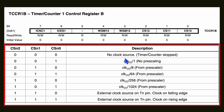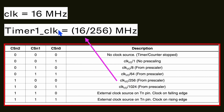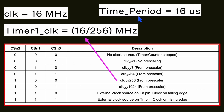For our example, we use a pre-scaler of 256, so Timer 1 clock = 16 MHz / 256 = 1/16 MHz. Converting from frequency to time period: time period = 1 / frequency, so the time period will be 16 microseconds per clock tick.